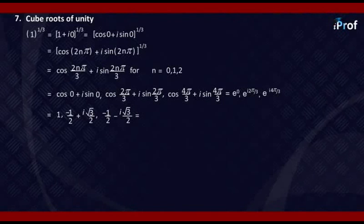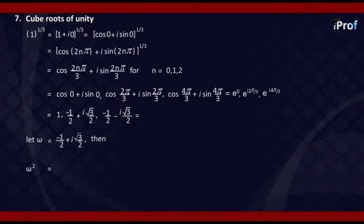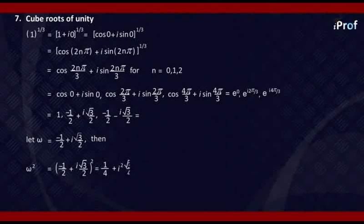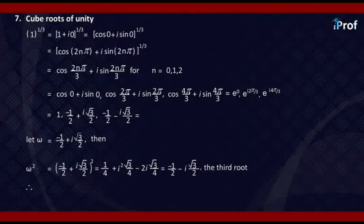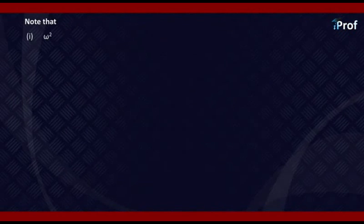Now, if we put minus 1 by 2 plus i root 3 by 2 equal to omega, it can be easily proved that omega squared is equal to the third root. Omega squared equals minus 1 by 2 plus i root 3 by 2, whole squared, which gives 1 by 4 plus i squared times 3 by 4 minus 2i root 3 by 4, which becomes minus 1 by 2 minus i root 3 by 2 — which is the third root. Hence, the cube roots of unity are 1, omega, and omega squared. We note that omega squared can be written as 1 by omega or conjugate of omega, and omega cubed is equal to 1.